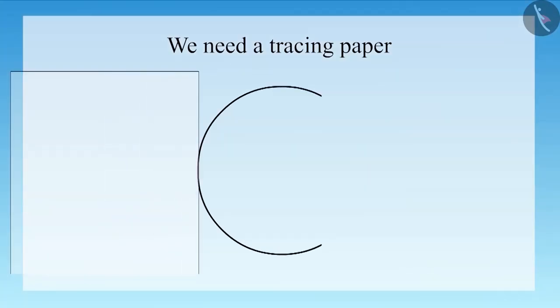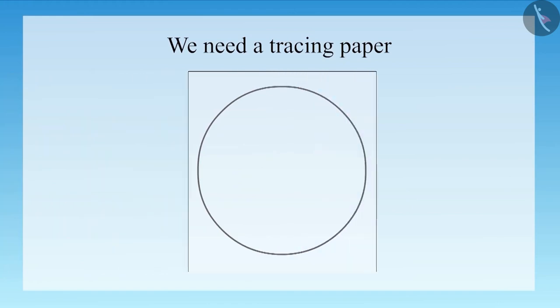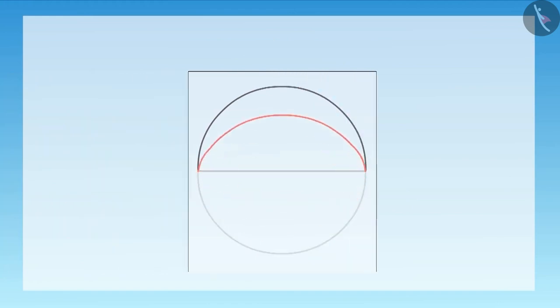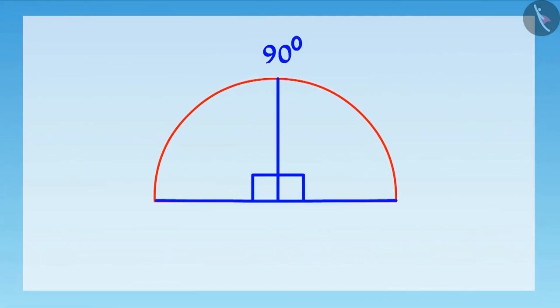See, first, take a tracing paper through which we can see across easily. Now, make a semicircle, that is half circle, on that paper. Divide that semicircle into two equal parts. You can see that 90 degree and 0 degree angles are being formed here.